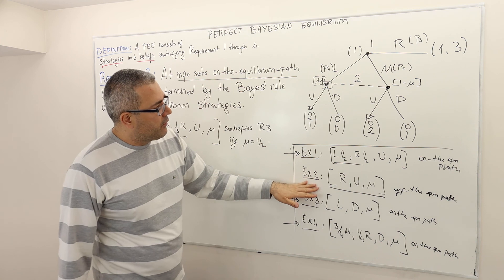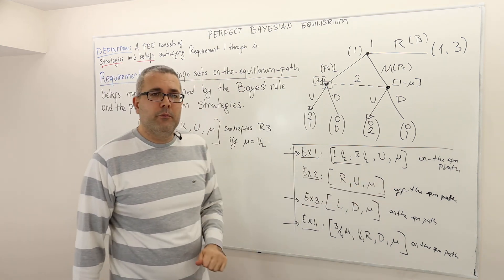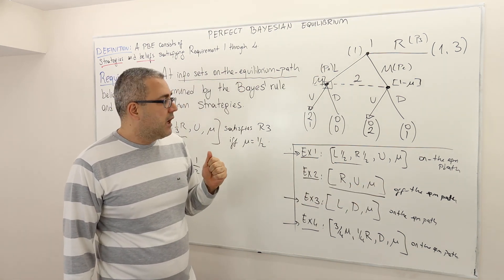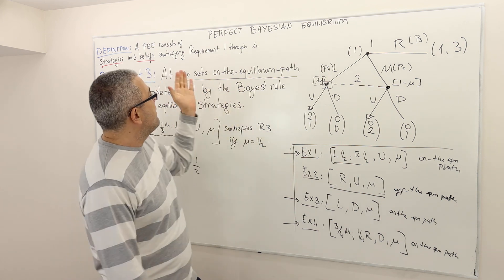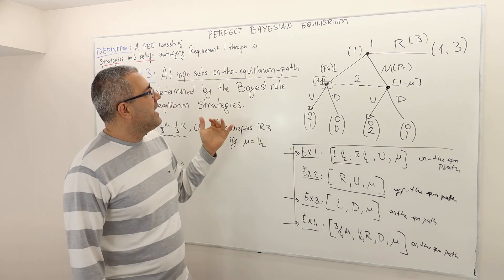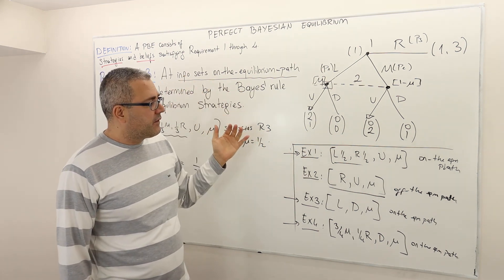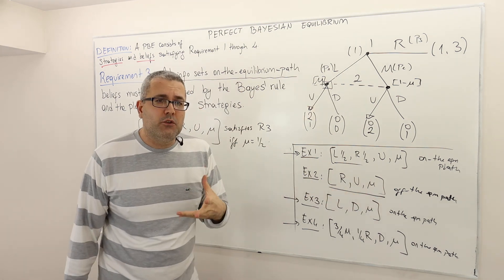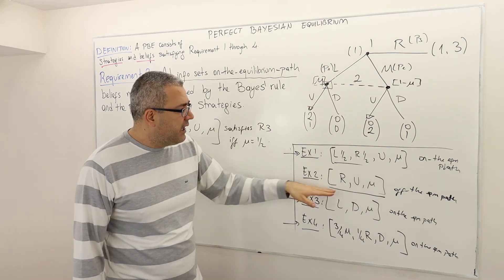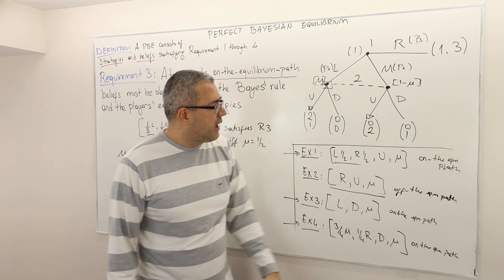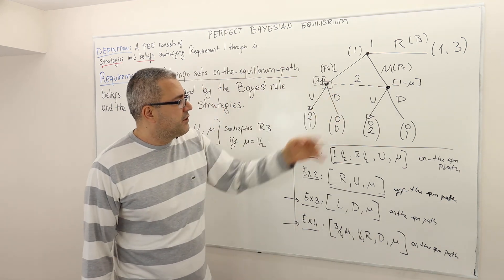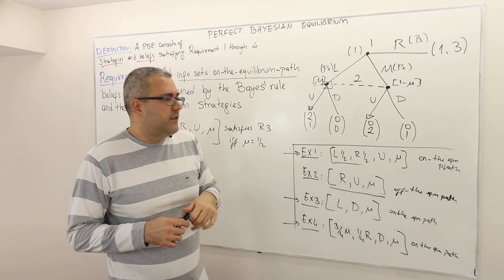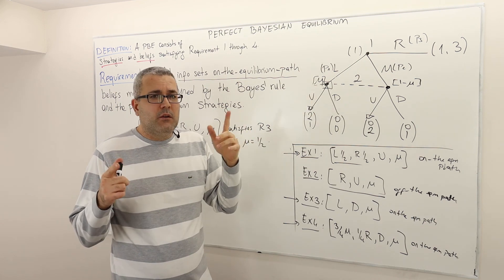What about example two? Does it satisfy requirement three? Remember, requirement three doesn't say anything about cases where the information set is off the equilibrium path. Here, because player one is playing right, the information set is off the equilibrium path — so mu can be anything.